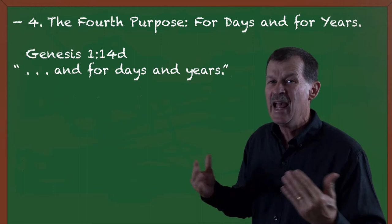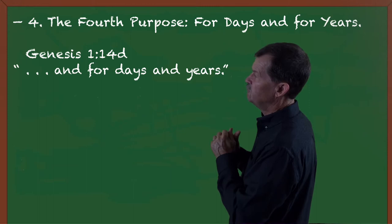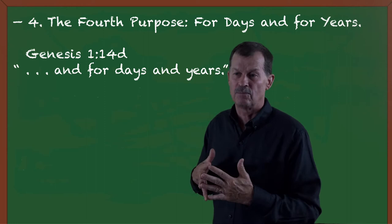What we're looking at is the fourth purpose. Why was the universe, why were the heavens created? And what we're looking at now is the fourth purpose says it was created for days and for years. That's Genesis 1:14, part D, the fifth part. It says, why was it created? Well, it was created for days and years.